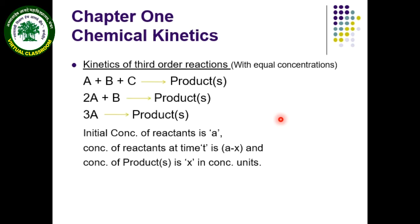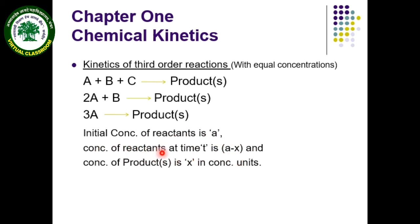Now for third-order reactions, according to the syllabus we are interested only in reactions with equal initial concentrations — that is, reactions of the type 3A gives products. Here a is the initial concentration of reactant, (a minus x) is the concentration of reactant at any time t, and x is the concentration of product formed at that time.